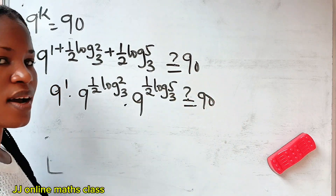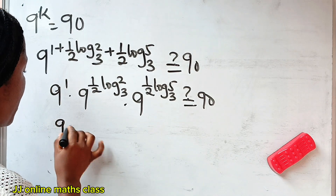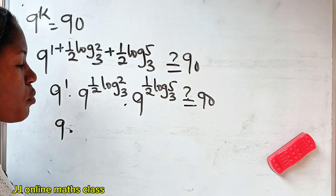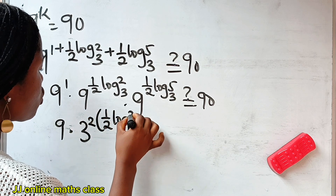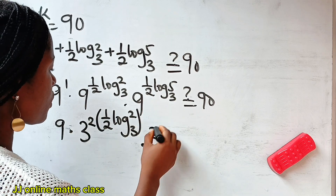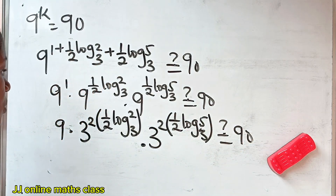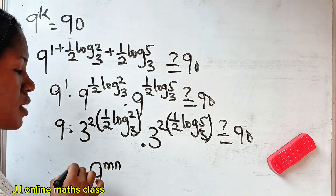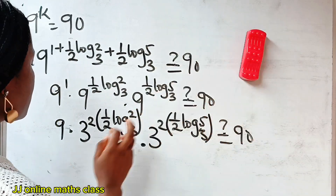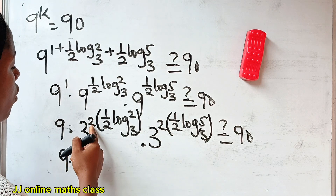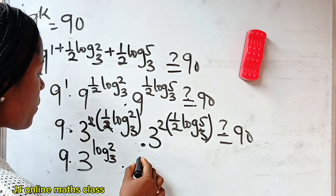Is this equal to 90? We have 9 to the power of 1 is 9. Now let's change 9 to 3 squared so that we can cancel out the half. So we have 3 squared raised to the power of one-half log₃2, multiplied by 3 squared raised to the power of one-half log₃5. Remember that A to the power of M raised to the power of N equals A to the power of M times N. So the 2 and the half cancel to leave us with 3 to the power of log₃2, multiplied by 3 to the power of log₃5.